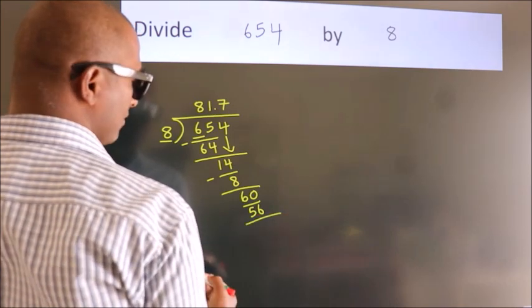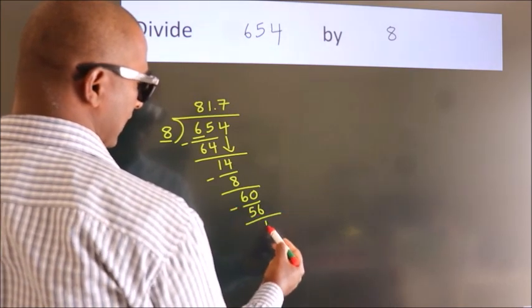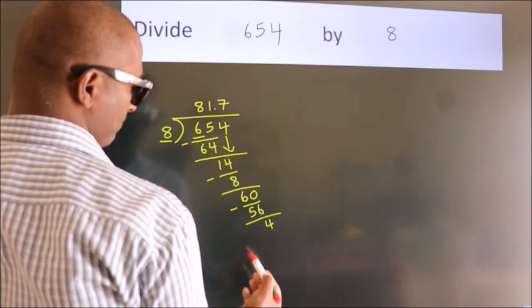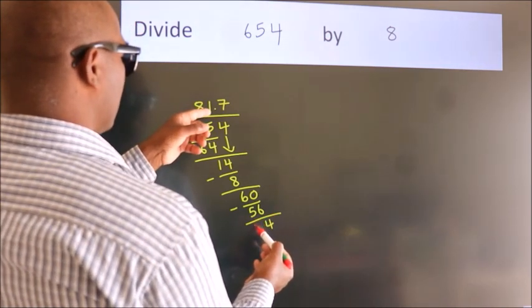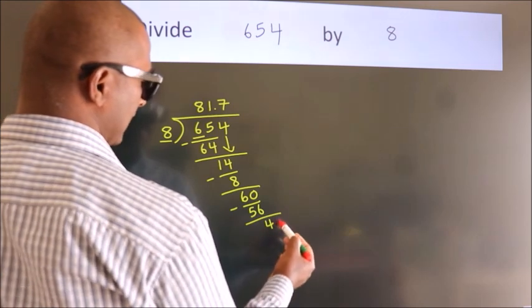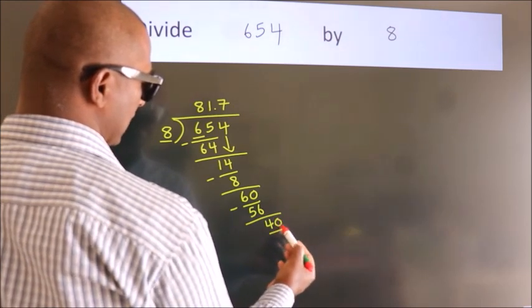Now, we subtract. We get 4. After this, we already have the decimal. So, directly take 0. So, 40.